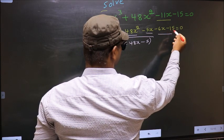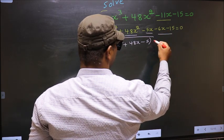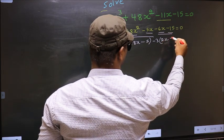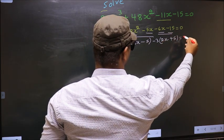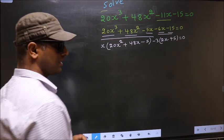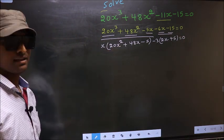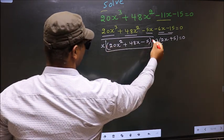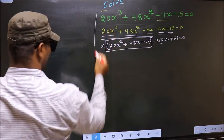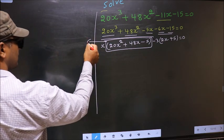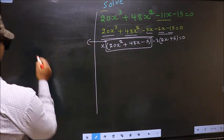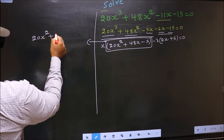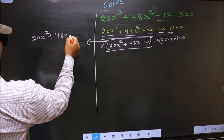From the last two terms, what can be taken out common is -3. So here you get -3(2x + 5) = 0. In this equation we have come across a quadratic, so I will factorize the quadratic: 20x² + 48x - 5.